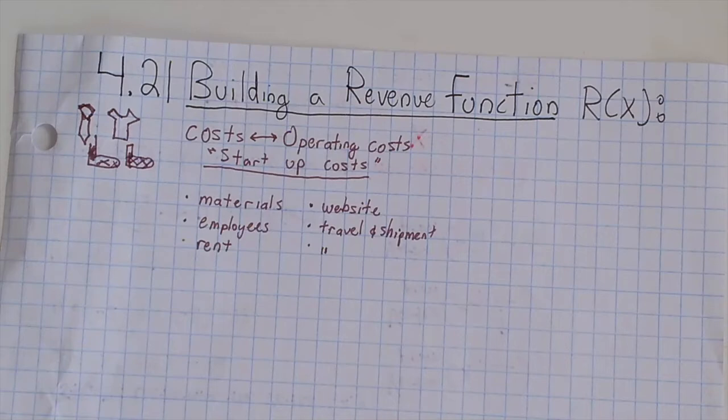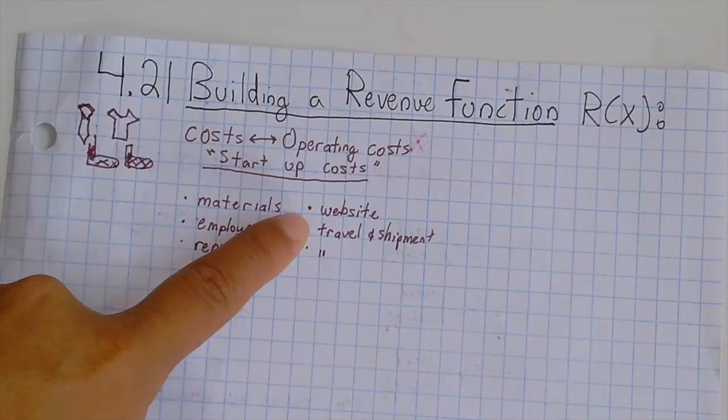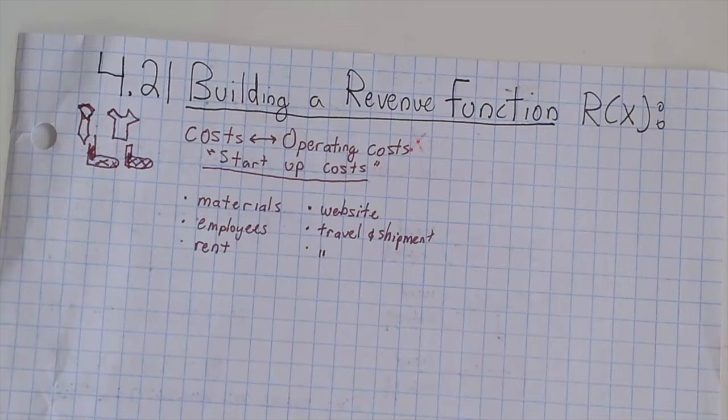So when starting a business, you need to find a way to make money off of it. Here are some essential questions. What are some of the operating costs or the startup costs? So for my example, for Andean clothes, the startup costs would be materials, pay my employees, the rent of the building of which they work in, and the website and travel and shipments because it's coming from a different country. So we have to go through customs there.